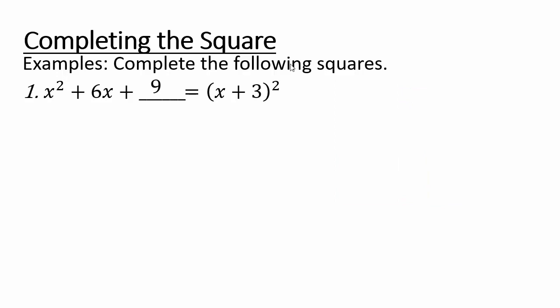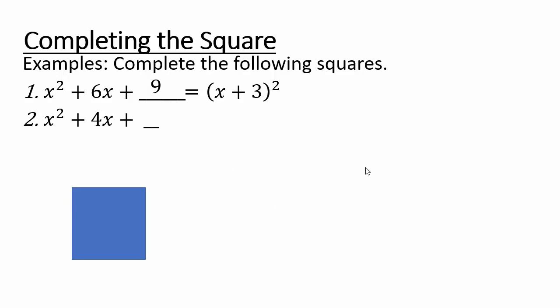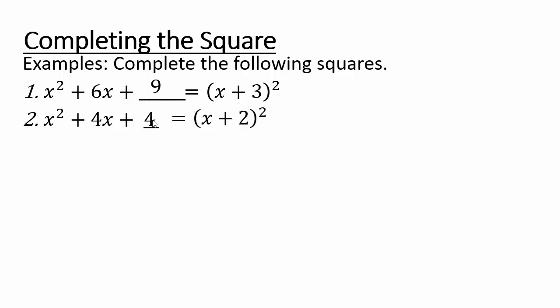Pause the video and try completing the square for x squared plus 4x. Half of 4 is 2 — place 2 strips on top and 2 on the side. To complete the grid, take the middle number, half of it (which is 2), square it to get 4, and add that. This gives x plus 2 squared. You are literally completing the squares.